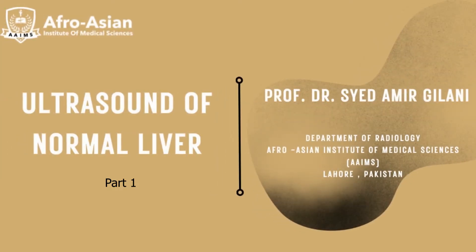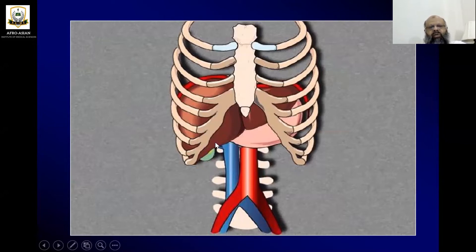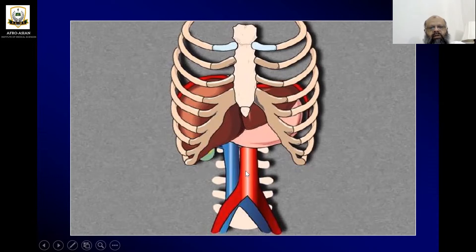The topic is sonography of the normal liver. Looking at the location of the liver, it is almost 60 to 70 percent covered by the rib cage. It is below the diaphragm, along with the vessels and the ribs.